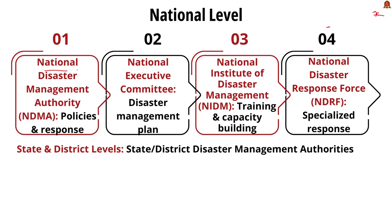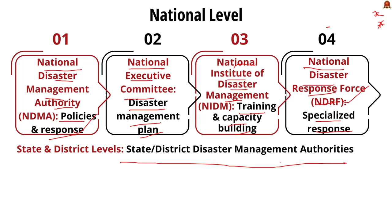There is an institutional structure for disaster management. At the national level, there are four important institutions: the National Disaster Management Authority (NDMA), which ensures disaster management policies and effective responses; the National Executive Committee, responsible for preparation of disaster management plans; the National Institute of Disaster Management, which provides training and capacity building; and the National Disaster Response Force (NDRF), with trained professionals for specialized responses. At the state and district level, there are State and District Disaster Management Authorities respectively.